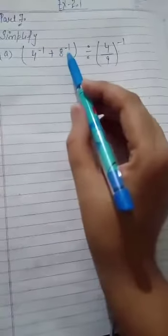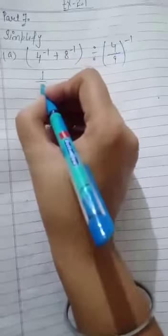First, we have to make all the exponents positive. How? Take the reciprocal of the number. 4 becomes 1 by 4, plus 1 by 8, divided by 9 by 4 raised to power 1. We can write 1 here and here. It becomes positive.